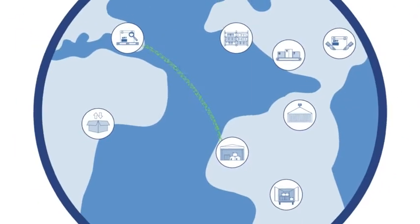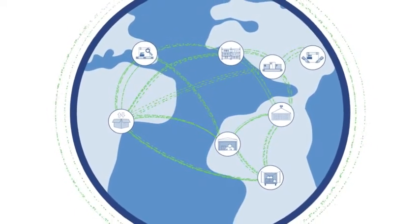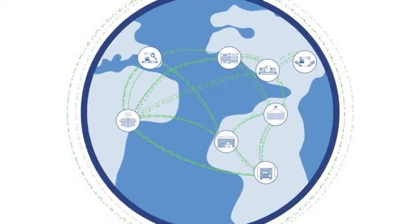With Pluto7, factories become connected entities, communicating with warehouses and distribution centers with minimal need for human decision making.